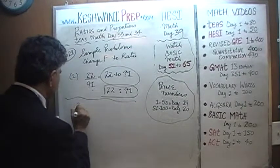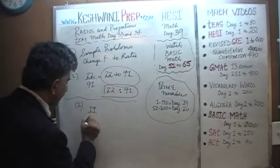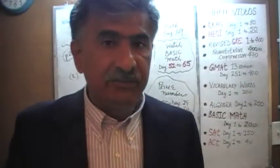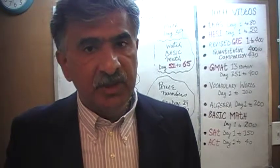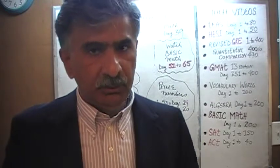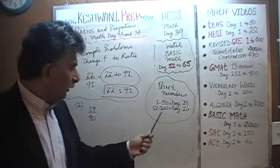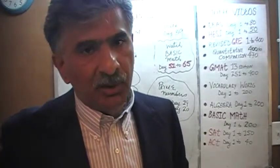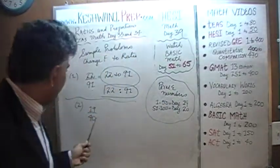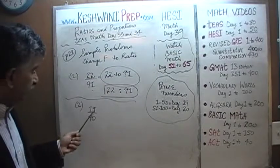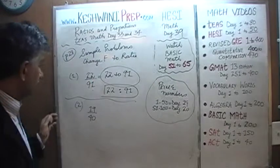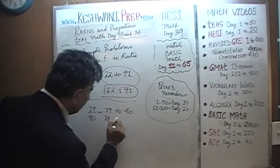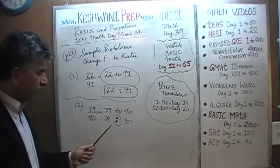Number 2: they are asking us to express the fraction 19 over 40 as a ratio. 19 is a prime number. How do we know? You have to ask yourself: is it divisible by 2, 3, 4, 5? You have to go through the series halfway through — for 19, that's all the way up to 9. Since 19 is prime, there are no common factors between 19 and 40. So we write it as 19 to 40, with two dots in there.